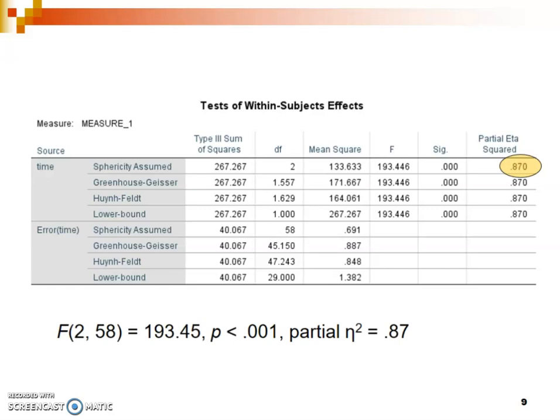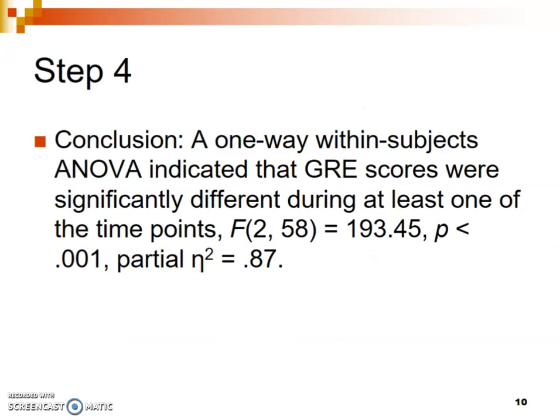Finally, report the measure of effect size. Since we found a significant effect, report the partial eta squared, found in that same row. If it's not appearing in your output, you forgot to check the effect size option when setting up the analysis. In the next video, I'll go over how to conduct the post-hoc test.